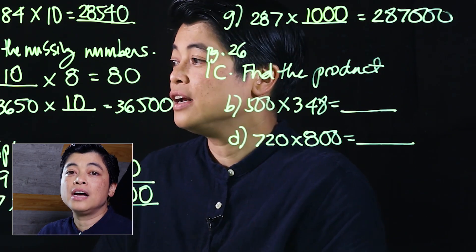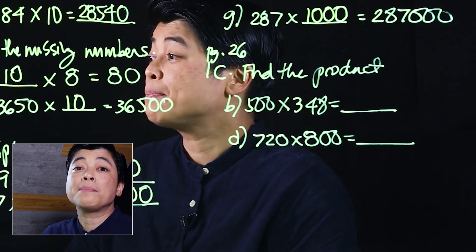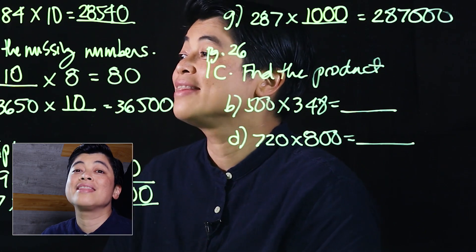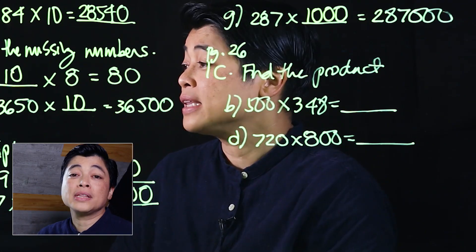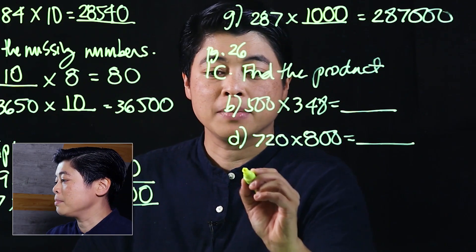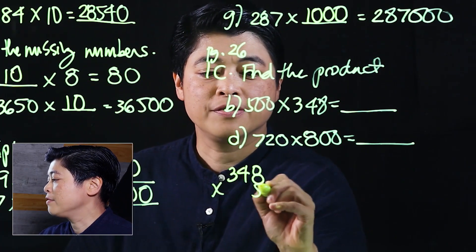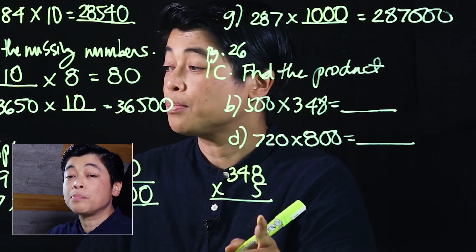Now on page 26, we're multiplying by multiples of 10, 100, and 1000. What we want to do is take the product of the numbers without the zero, and then add the zeros at the end. These are computational in nature, so I'll put my computation down here: 348 times 5. When we get the product of that, we add two zeros.